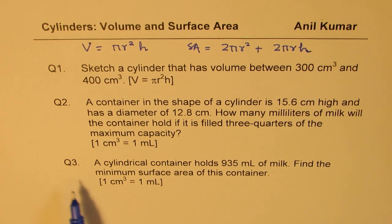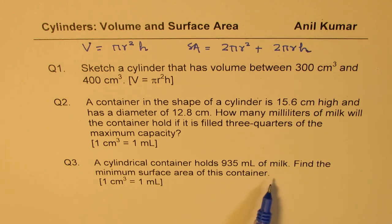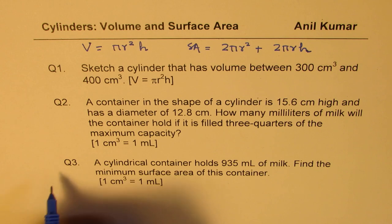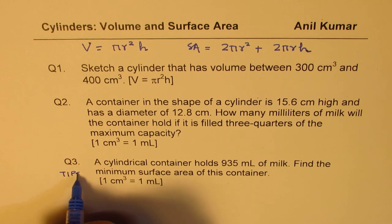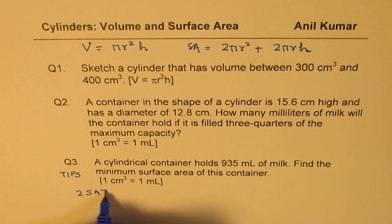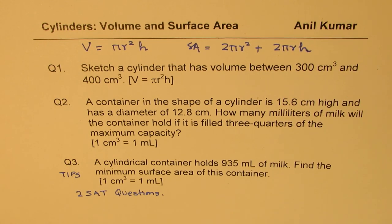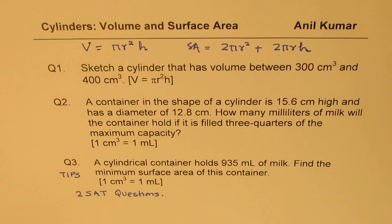Question three: a cylindrical container holds 935 milliliters of milk. Find the minimum surface area of this container. That's a thinking question. So let me write this as tips. Based on this question, I have two SAT practice questions for you which I'll add at the end. So basically we'll look into these five questions for the video.